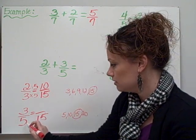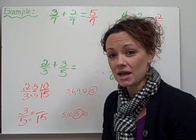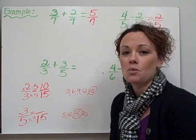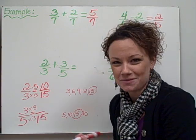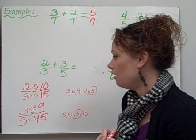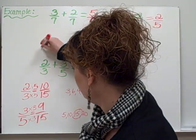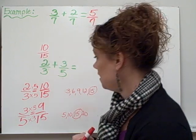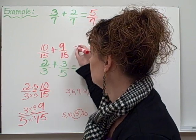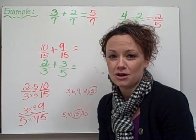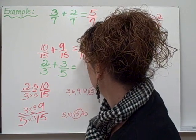Now we move on to our bottom fraction. Again we look at the denominator and ask ourselves, how does 5 get to 15? We're multiplying — 5 times 3 equals 15. Whatever we do to the denominator, we must do to the numerator, so we also multiply our numerator by 3. And 3 times 3 equals 9. Now I rewrite the original problem: 2 thirds is equivalent to 10 fifteenths, and 3 fifths is equivalent to 9 fifteenths. Since we're adding and the denominators are now the same, 10 plus 9 equals 19, and my denominator stays the same.